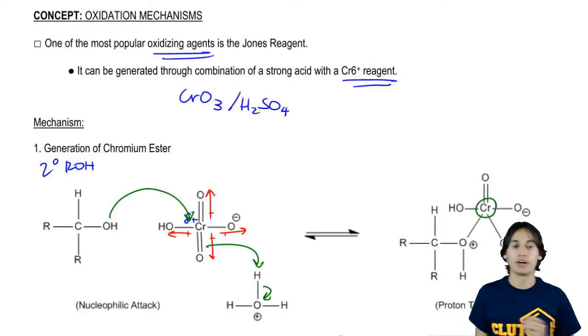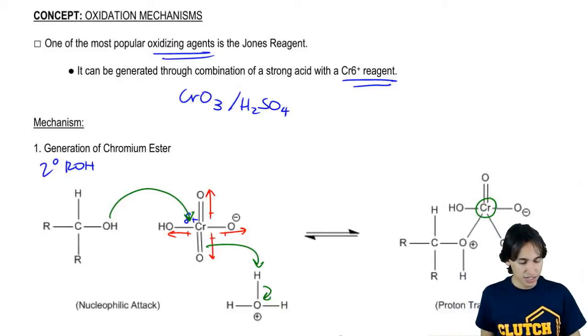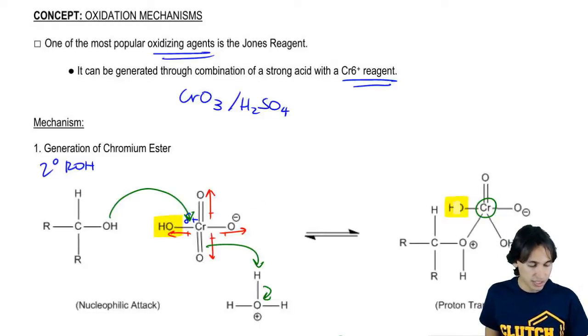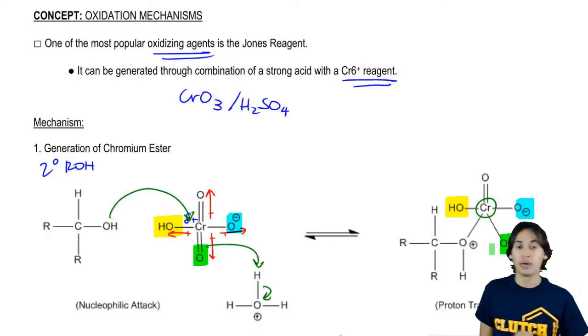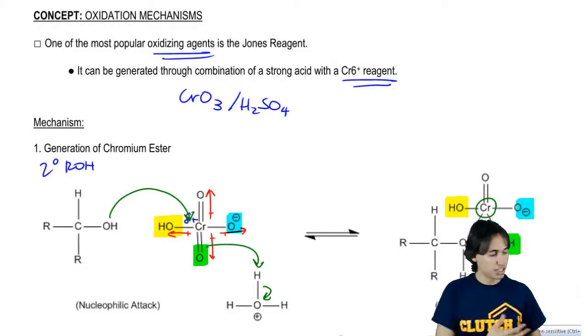So now what we're going to get is this very strange molecule. Let me help you guys keep track. The chromium still has six bonds, right? But now instead of having two double bonds, it has an OH. I'm just going to use colors to show you - this OH here is this OH here. Nothing happened to that one. And then this O is here. The only difference is that now this O has an OH on it. Does that make sense? Because the O grabbed an H.